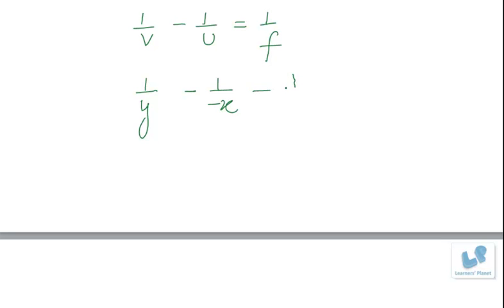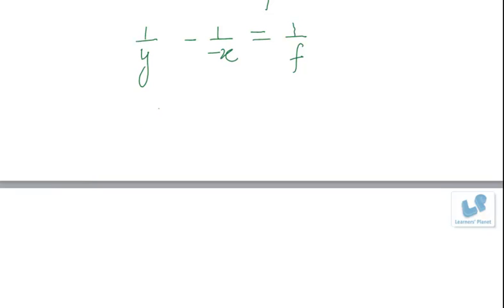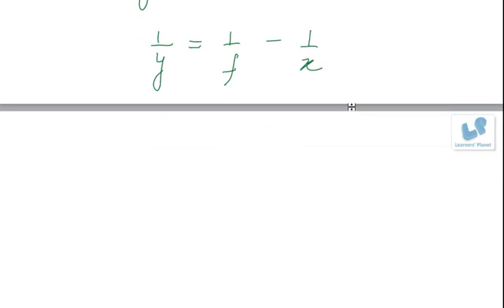So y is always positive and u is 1/(-x) = 1/f. Now we can write this as 1/y = 1/f - 1/x. If we plot this curve, that is y with x, it will be this kind of curve.